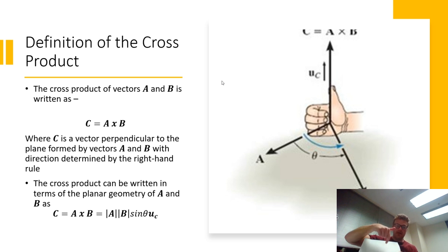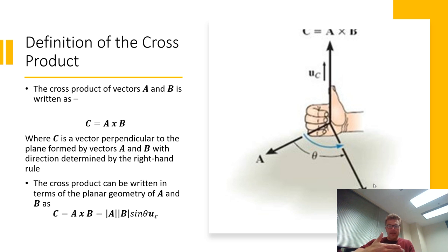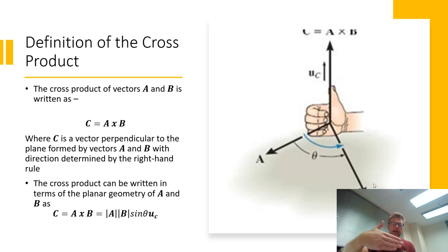The cross product vector will either come out of the plane or into the plane, and how you determine which is known as the right-hand rule, as shown in the figure. For A cross B, you take the base of your right hand, align it along the first vector — because the cross product is not commutative, so order matters — and curl toward the second vector. The direction your thumb points is the direction of the cross product.